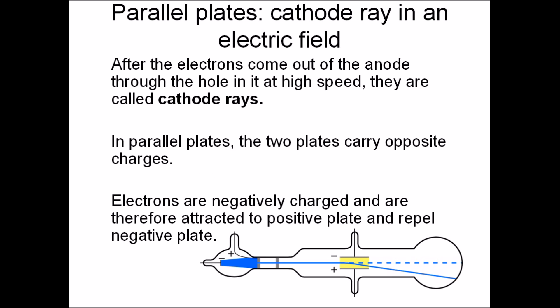After electrons pass through the hole in the cylindrical anode, they go through parallel plates with opposite charges. Cathode rays deflect towards the positive plate and away from the negative plate because they're negatively charged.